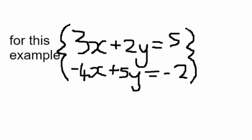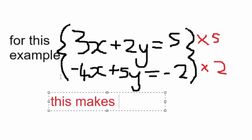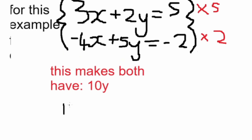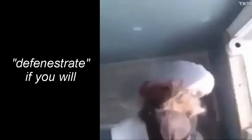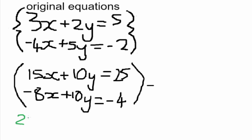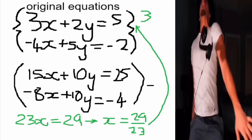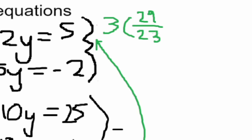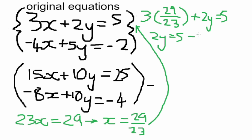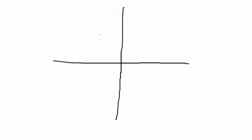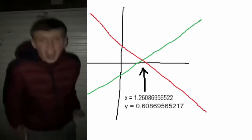For this example, we multiply the entire top equation by 5 and multiply the bottom by 2. This makes the y coefficient for both equations the same, and thus we just subtract them from each other to get rid of the y variable. We are left with 23x equals 29. Divide both sides by 23 and you get x equals that value. Launch that back into the simplest original equation — in this case the top one — do the math and solve for y. 2y equals that value, therefore y equals that. These are the coordinates for where the two lines intersect.